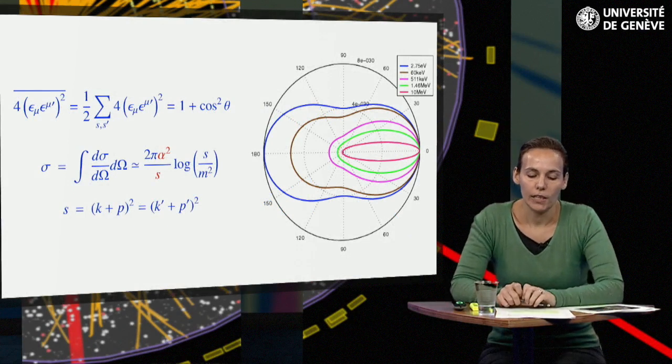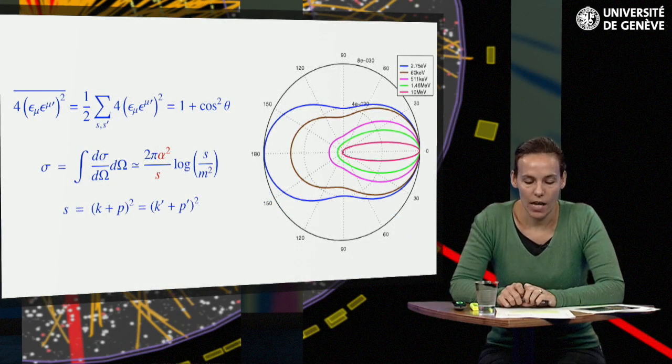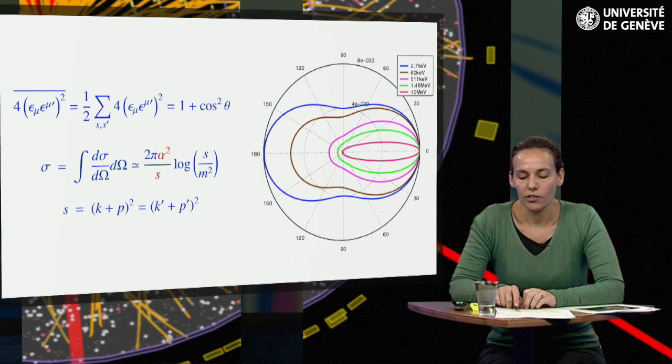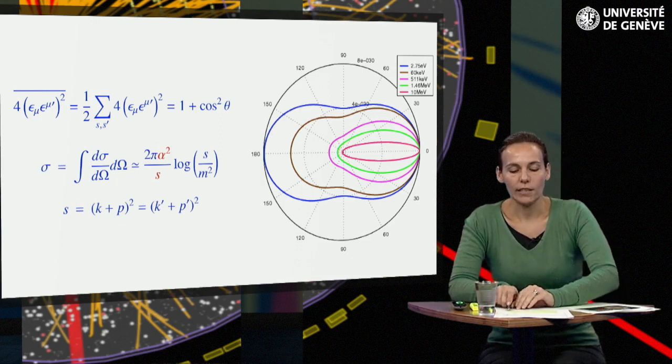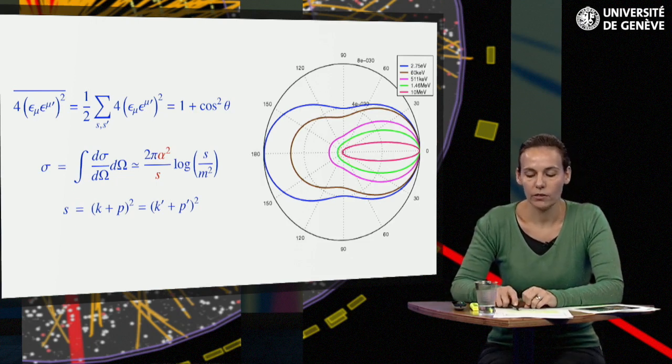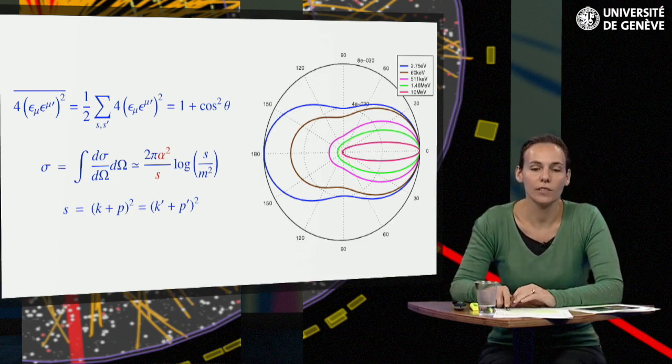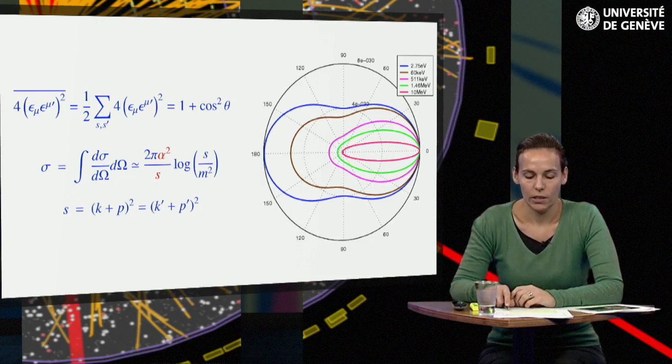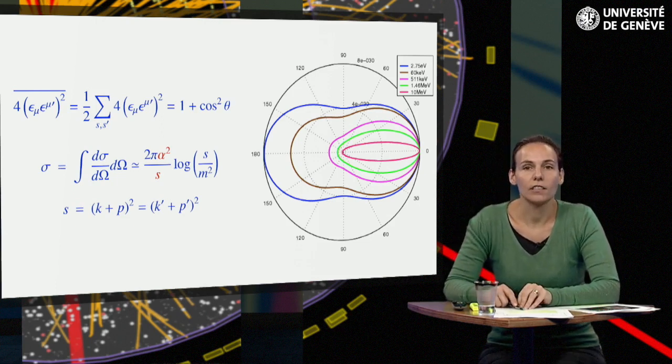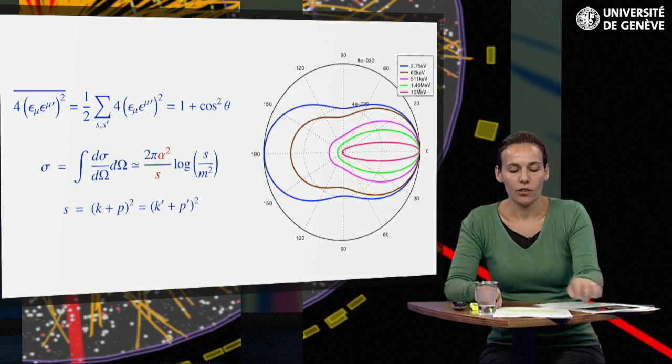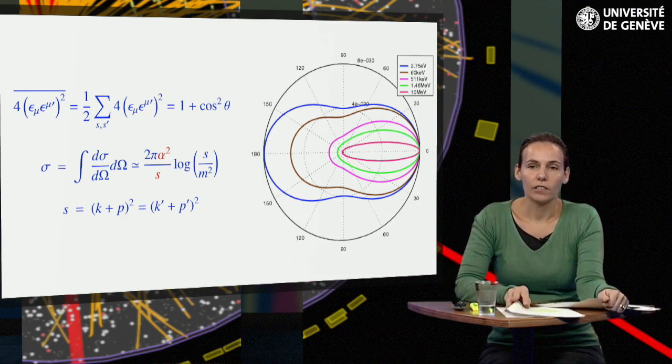At high photon energy, omega much larger than m, the total cross-section is roughly inversely proportional to the square s of the total initial energy. This is a property shared by all scattering processes between point-like particles. Their cross-section decreases with the square of energy scale which characterizes the process. Obviously, the square of the fine structure constant alpha again determines the order of magnitude of the cross-section.